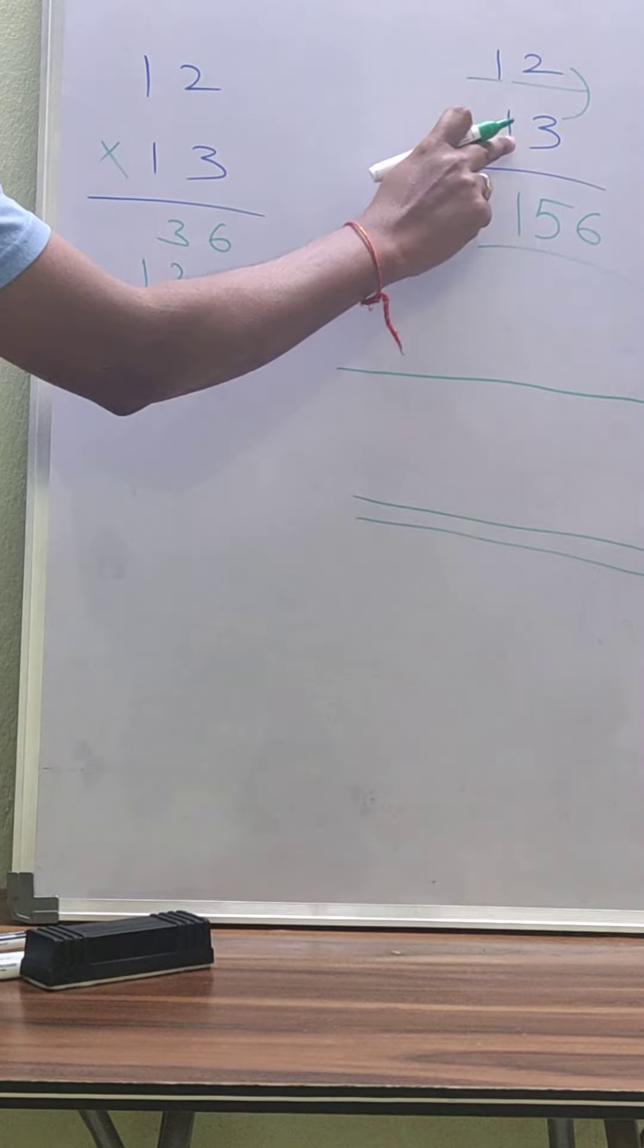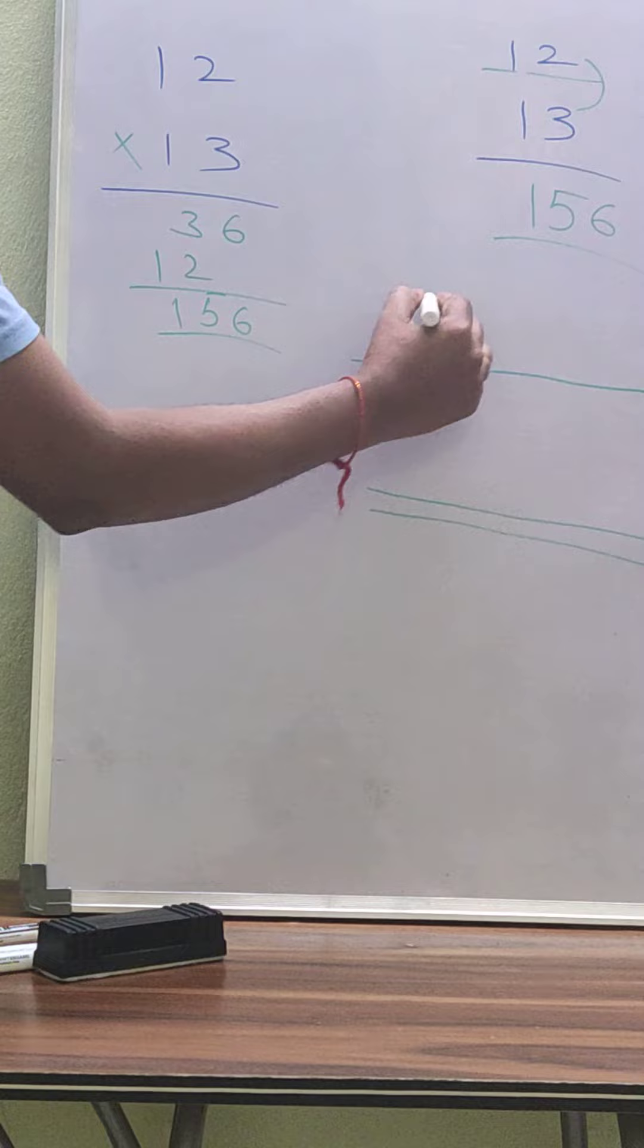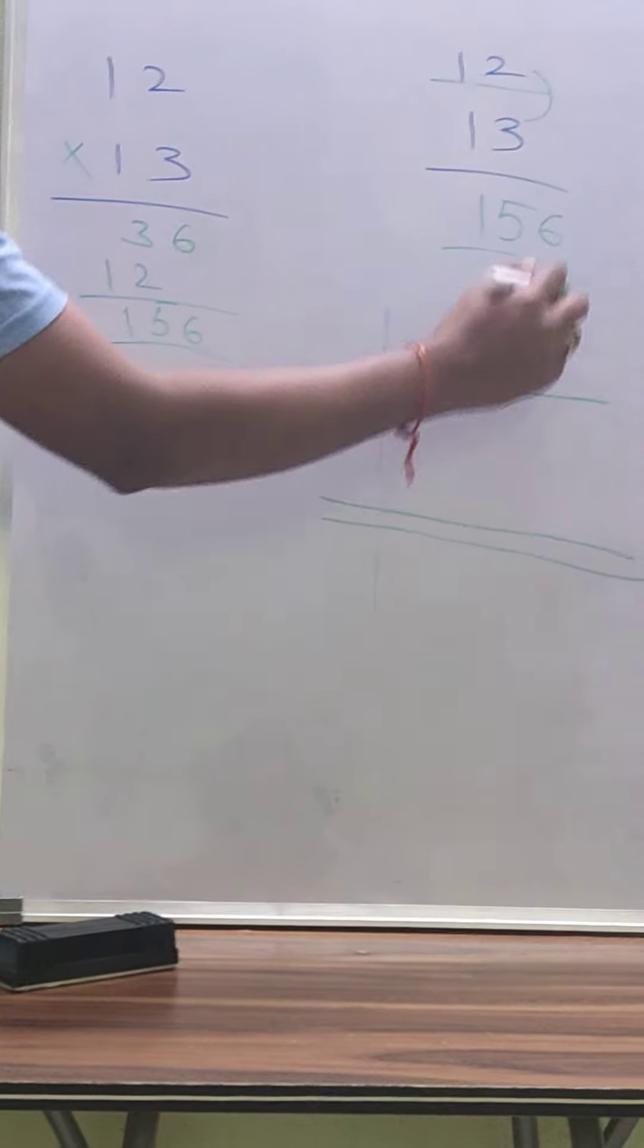Next, here 1, 3. 1, 3 means 1, draw 1 line vertical. Next, 3, draw 3 lines vertical.